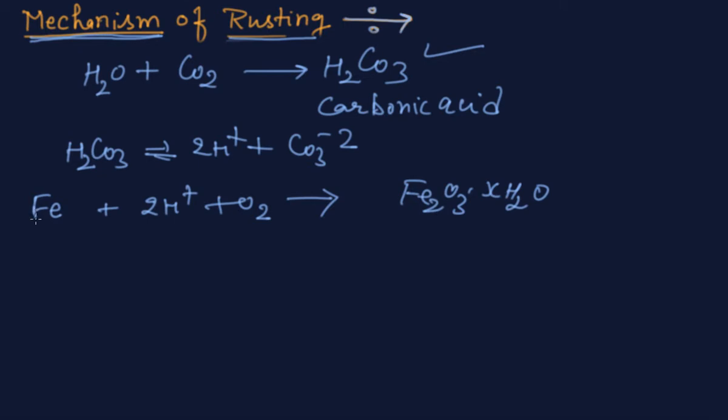Then iron, you know that transition element capable of showing variable valences. The hydrogen which is released by the breakdown of the carbonic acid will enter into the iron with availability of oxygen and it will form the hydrated iron oxide that is known as rust.